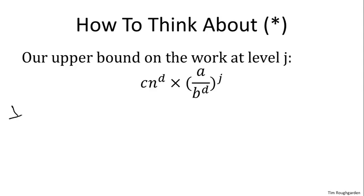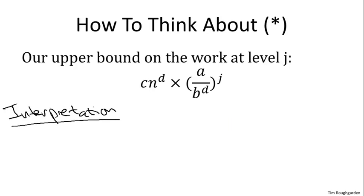Now, as messy as this expression might seem, perhaps we're on the right track in the following sense. The master method has three different cases, and which case you're in is governed by how A compares to B to the D. And here in this expression we are seeing precisely that ratio, A divided by B to the D. So let's drill down and understand why this ratio is fundamental to the performance of a divide and conquer recursive algorithm.